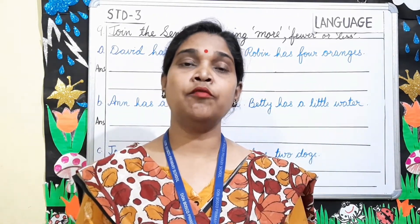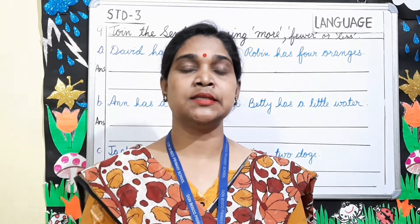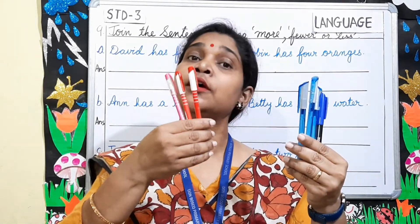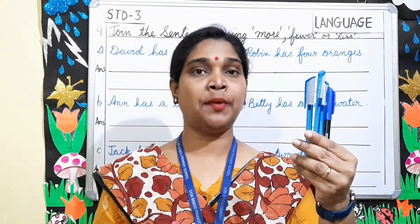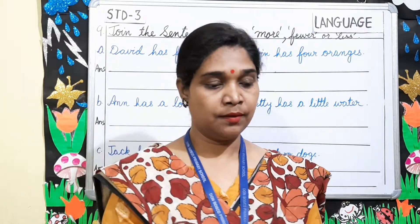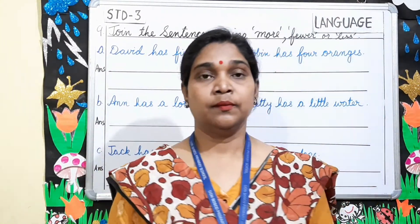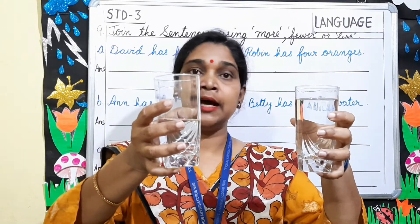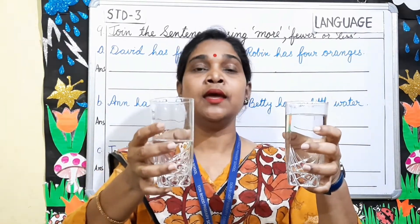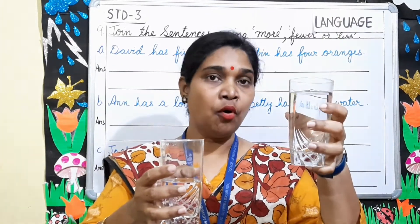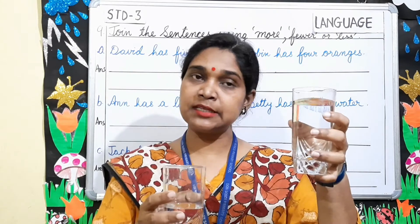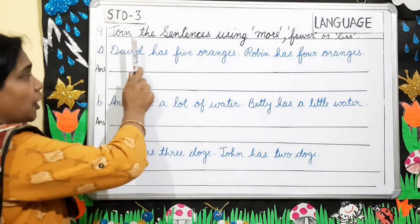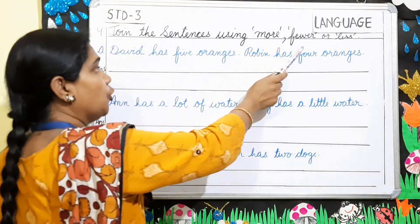In Exercise 9, we will make use of 'more,' 'fewer,' and 'less' in our sentences. Now children, in this hand I have got four pens and here in this hand I have got three pens. Here I have got more pens and here I have got fewer pens. I have two glasses of water — in this I have more water and in this glass I have less water. When you compare uncountables, you compare with 'more' or 'less.' In Exercise 9, join the sentences using more, fewer, or less.